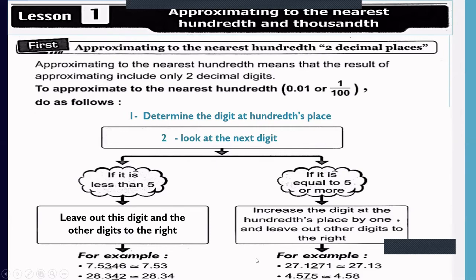Example: 4.575. The digit at the hundredths place is 7. The next digit is 5, so I will increase the hundredths digit by one and cancel all digits to the right. 7 becomes 8 — approximately 4.58.